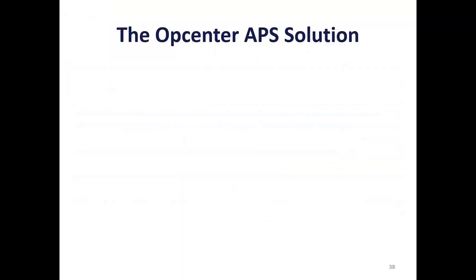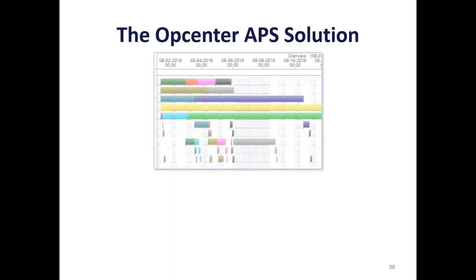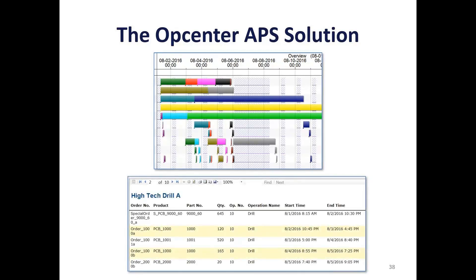The OpCenter APS solution, produced by Siemens and resold and configured by PNC, is a best-in-class solution. To the production control team, it presents Gantt charts, utilization charts, and diagrams that help them understand the baseline schedule and modify it based on tribal knowledge and the fluctuations that external and internal contingencies make inevitable. From outside the production control team, the outputs can be simple, straightforward tabular outputs showing what will be produced, where it will be produced, and when production should start and end, so everyone on the shop floor or in the management hierarchy knows what the expectations are.